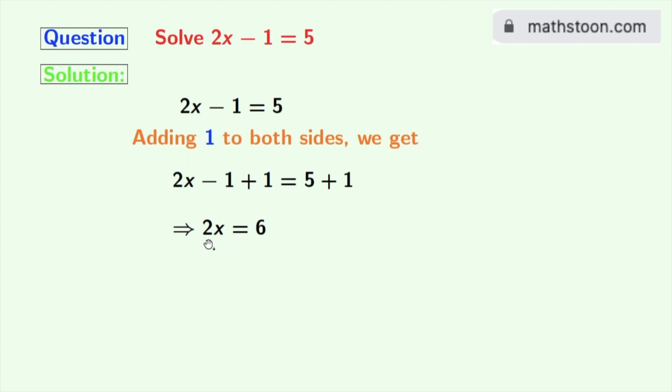As the coefficient of x is 2 we will divide both sides by 2. So we get 2x divided by 2 is equal to 6 divided by 2. See that 2 and 2 get cancelled so we are left with x. So x is equal to 3 as 6 divided by 2 is 3.